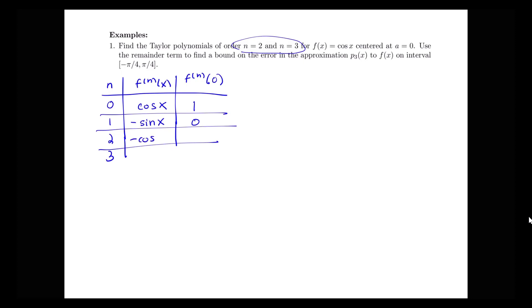So I'm going to have negative cosine x. Cosine evaluated at 0 again is 1. So I'm going to have negative 1. Take the derivative again. I have positive sine x. And sine of 0 is 0.